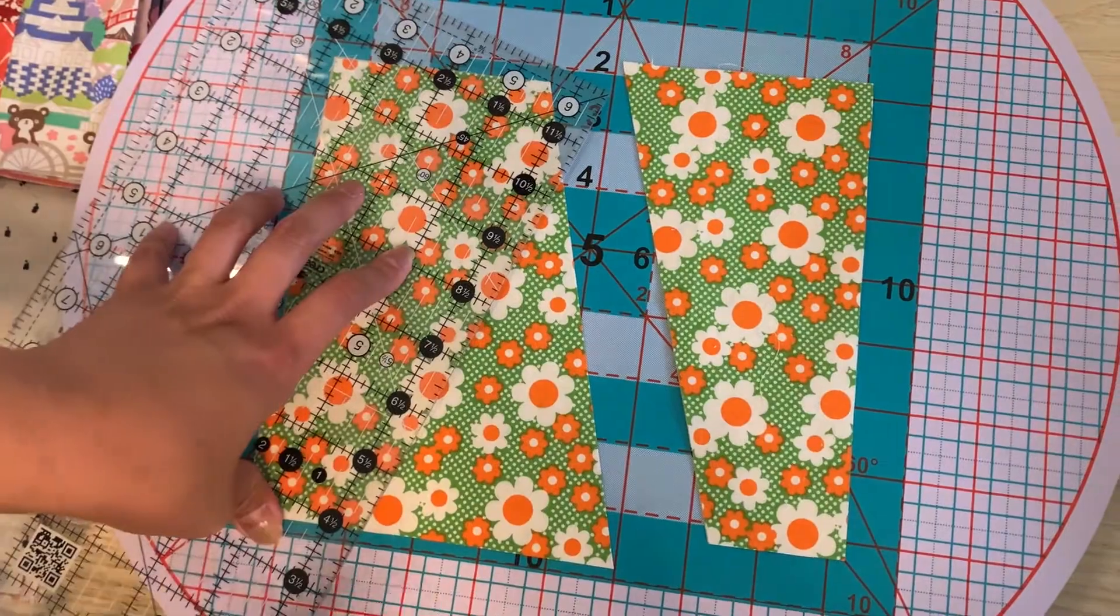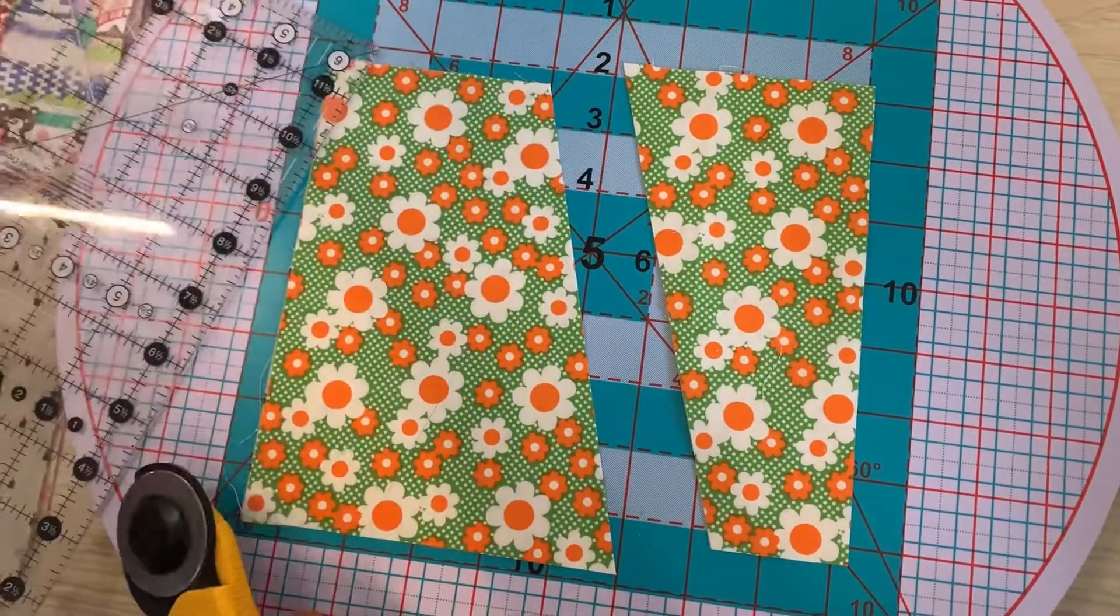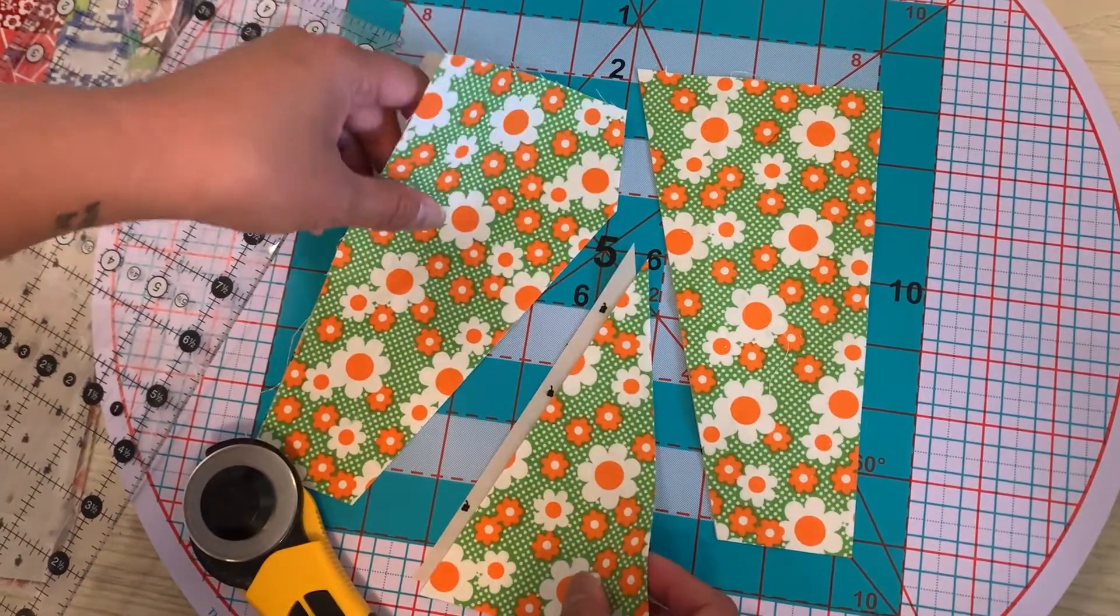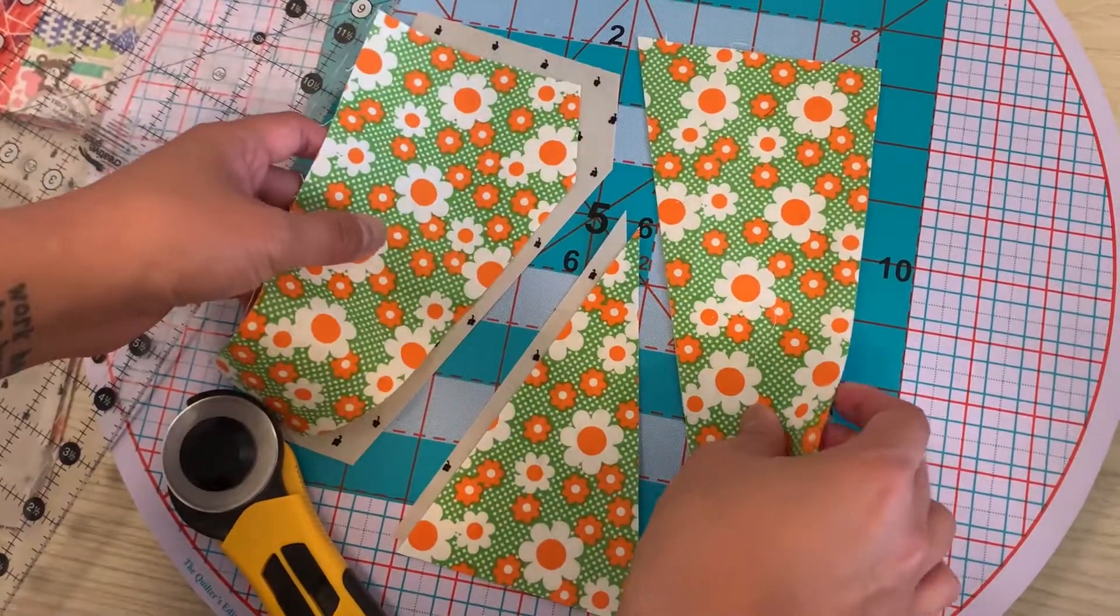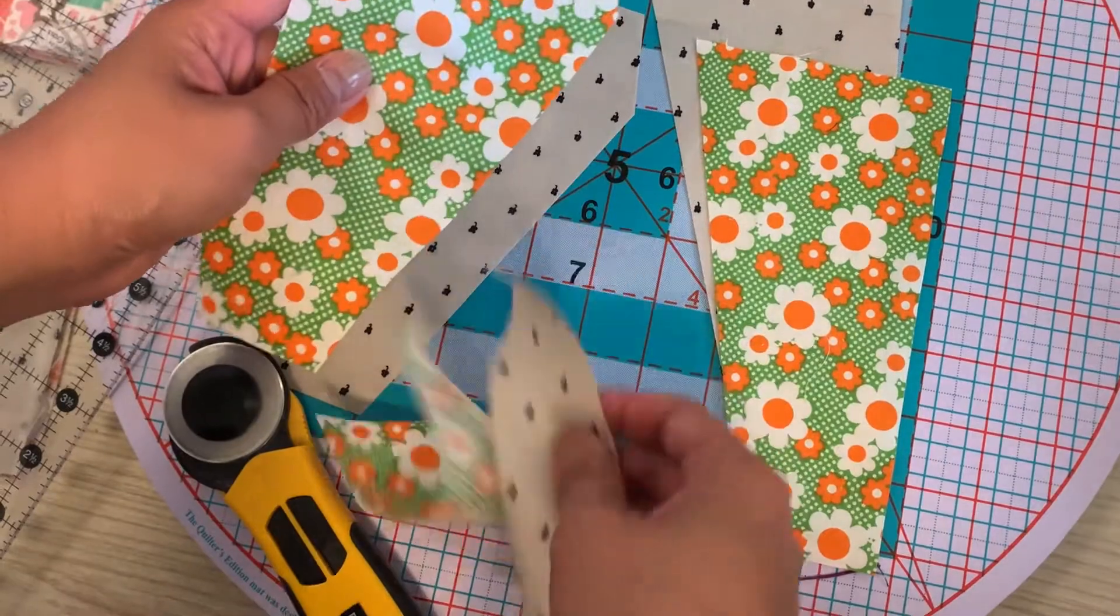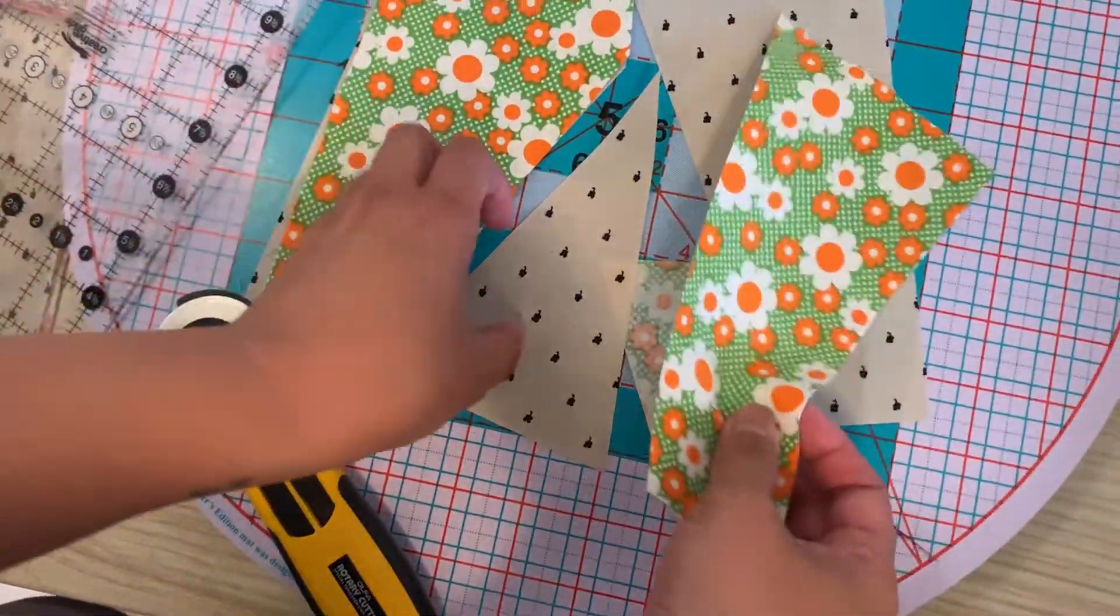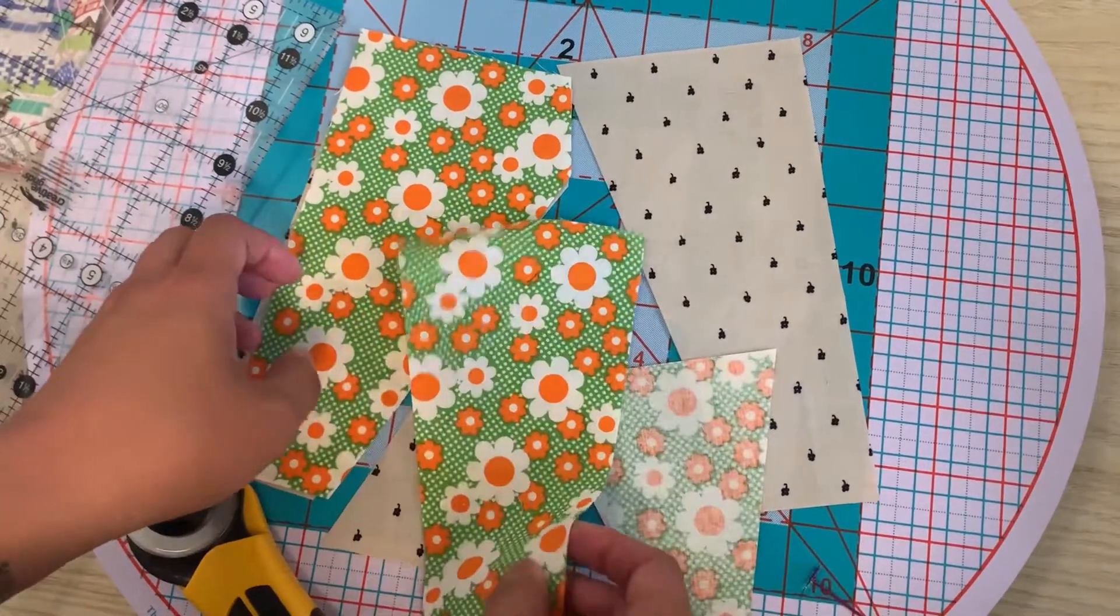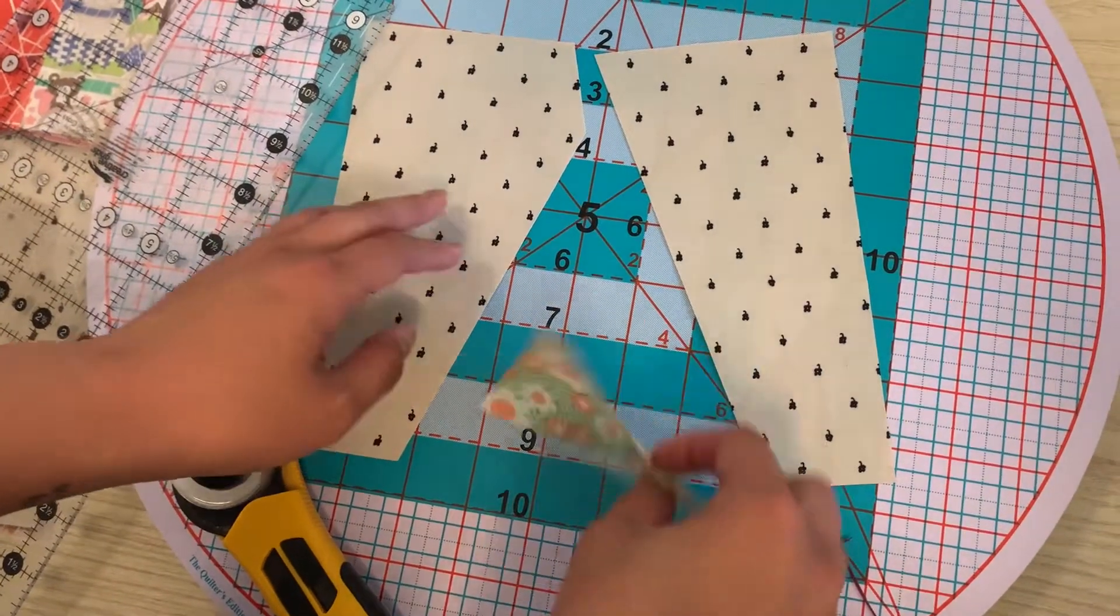Now, what I would suggest is there's parts of the tree that you're not going to need in the village. I would take these pieces, these tree pieces that you're not going to use, and I would put them on the back of your quilt. Don't waste them, you know what I mean. So I'm going to leave those to the side and this is my tree block.